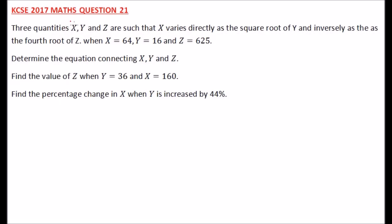This is 2017 Mars KCSC, question number 21. We have three quantities x, y, and z such that x varies directly as the square root of y and inversely as the fourth root of z. When x is equal to 64, y is equal to 16, and z is equal to 625. Determine the equation connecting x, y, and z.